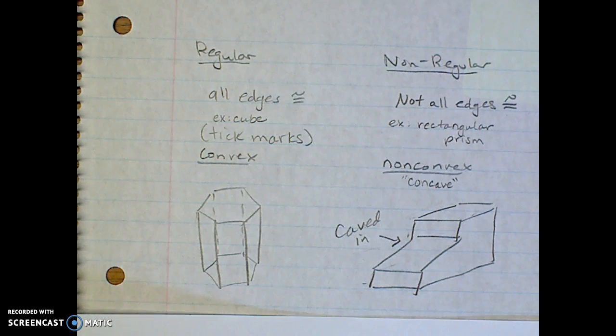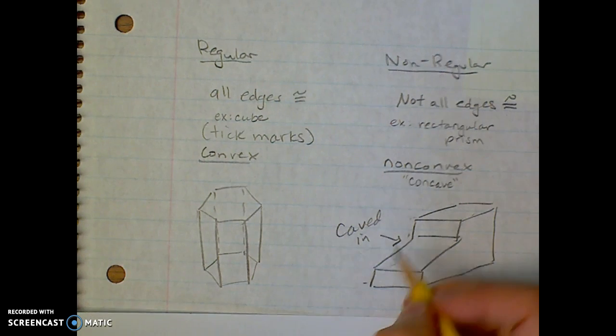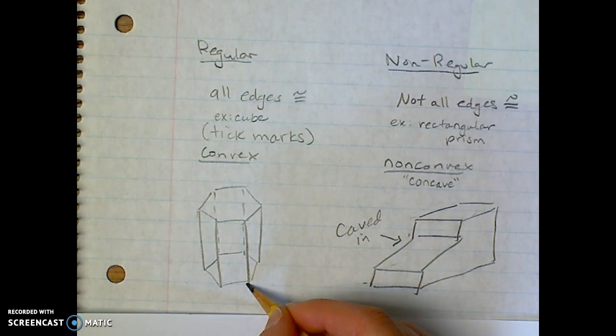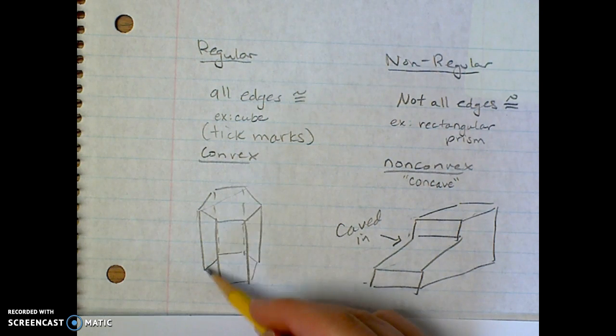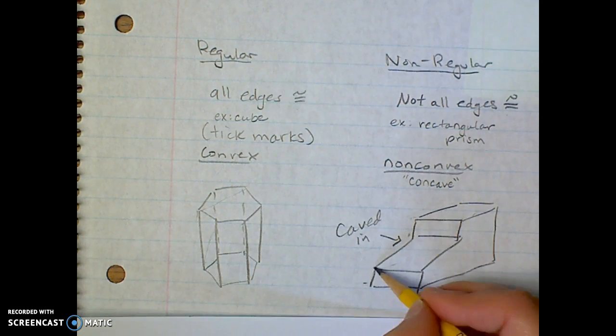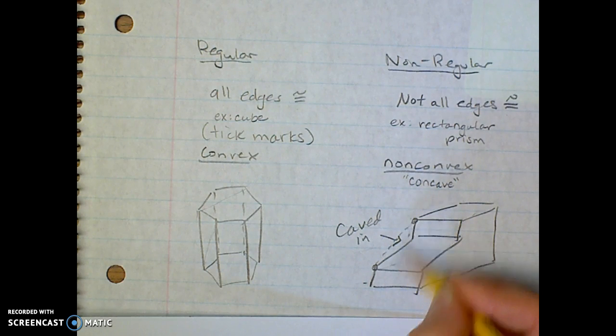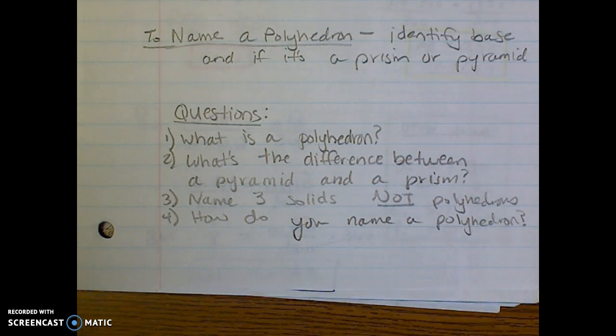If it doesn't have a chunk taken out of it, if all the diagonals are inside the figure or on the figure, then it would be convex. But if you could draw at least one diagonal on the outside, not convex.